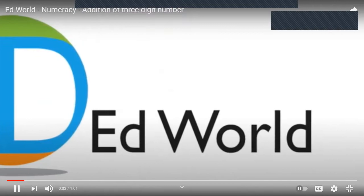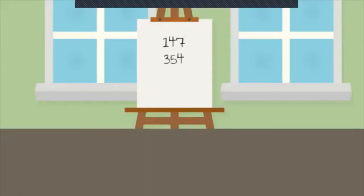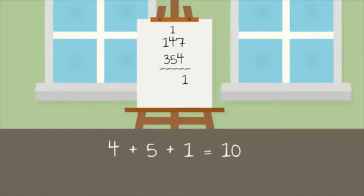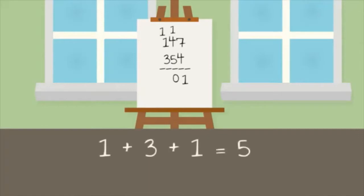Let's learn about three-digit addition: 147 plus 354. We start from the right side — 4 plus 7 is 11, so we write 1 down here and carry 1 on top of the next column. Then 4 plus 5 plus the remainder 1 is 10, so 0 comes here and 1 is carried over. Then 1 plus 3 plus remainder 1 equals 5. So the answer is 501. This is how you do three-digit addition.